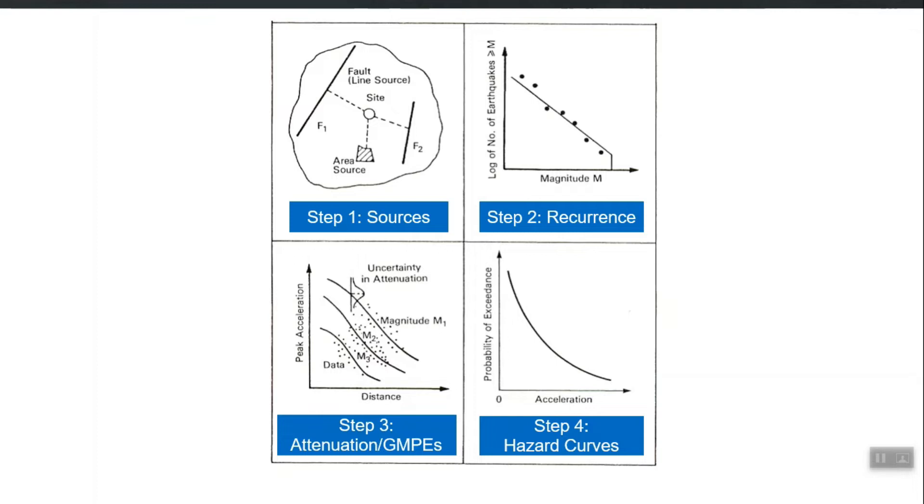So the best way to deal with such random phenomena is that we use probabilistic framework. Because of all those uncertainties involved, this is actually the main reason why we use probabilistic framework for hazard assessment. We will say that the probability of exceedance associated with this particular PGA is this much, 2 percent in next 50 years or 10 percent in next 50 years.